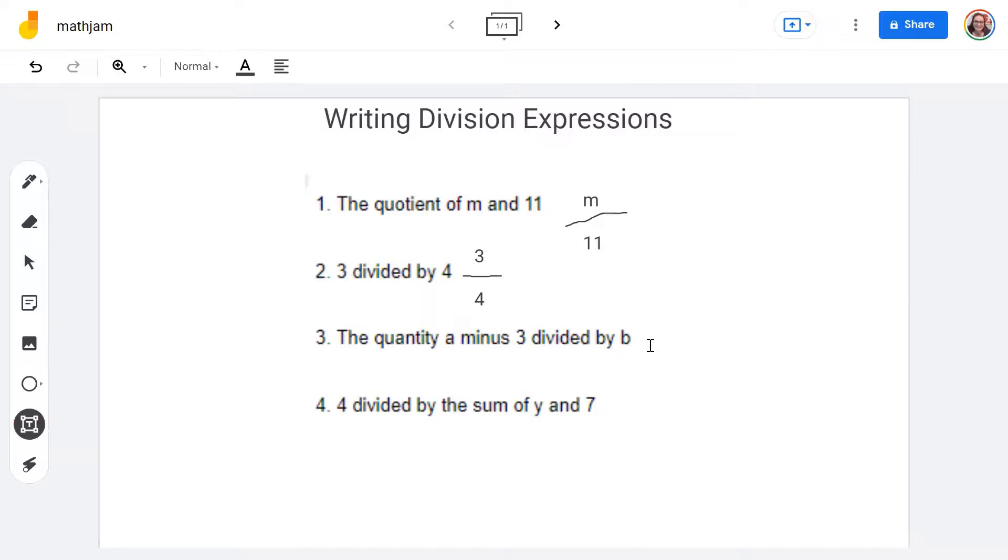So the quantity of A, so we've got our letter A minus three. And then we're going to be dividing it by B. So let's go ahead and we'll put the B as close as we can in the middle there. So that problem is going to look like this.